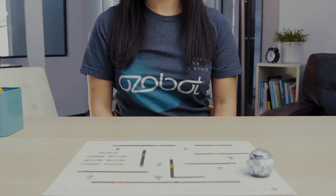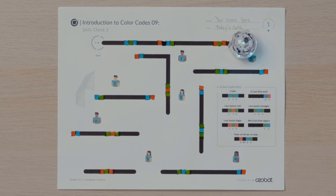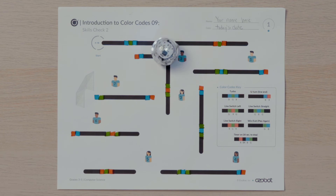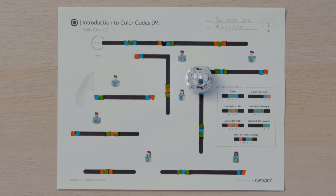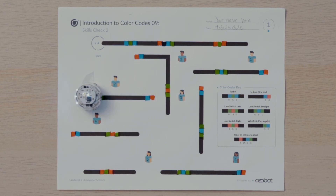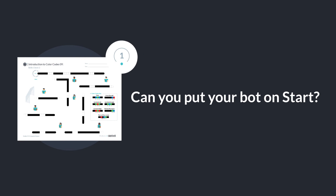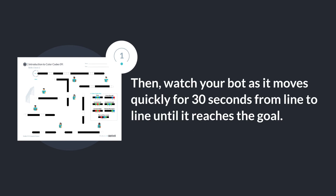Time to see if Ozobot can score the winning goal in 30 seconds. Put your bot on start and watch as it follows the color codes to change speed, start the 30-second timer, move from line to line, and celebrate. Can you put your bot on start? Then watch your bot as it moves quickly for 30 seconds from line to line until it reaches the goal.